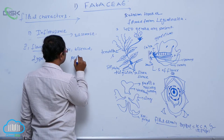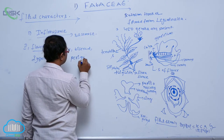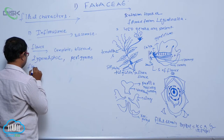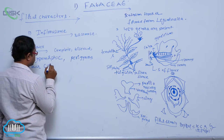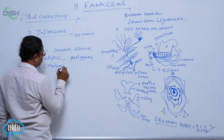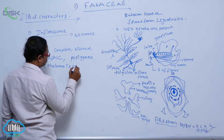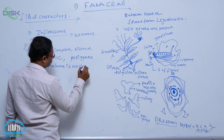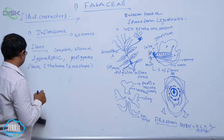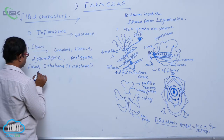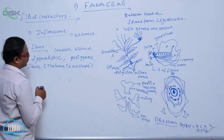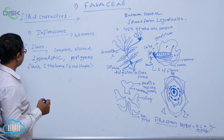Next is the perigynous flower, which means the thalamus is cup-shaped. So to summarize: complete flower, bisexual flower, zygomorphic flower, and perigynous flower.